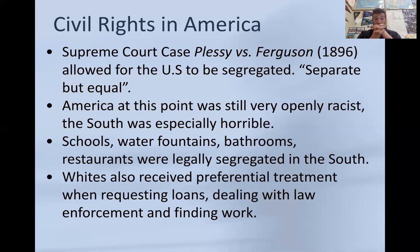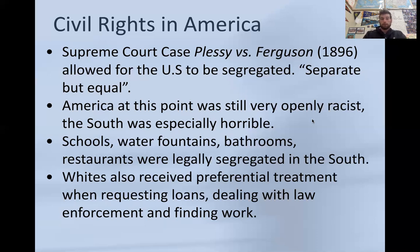We just don't have time for all that. Schools, water fountains, bathrooms, restaurants were all legally segregated in the South. That's just the way it was — white people in one neighborhood, Black people in the other. Whites almost always received preferential treatment when dealing with loans, police officers, and finding work, whereas Black people struggled, especially in the South. But across America, racism was bad — still is in some ways today, but especially back then.